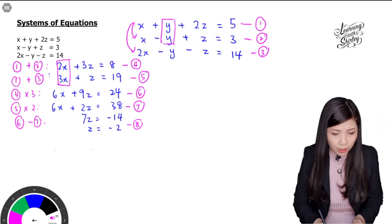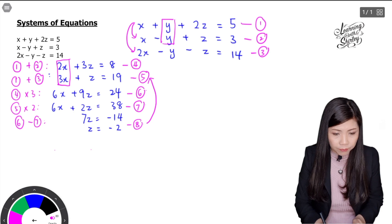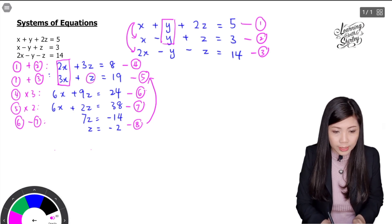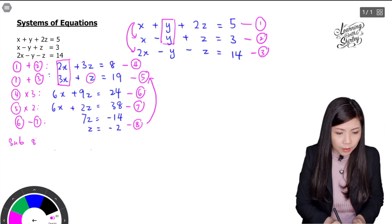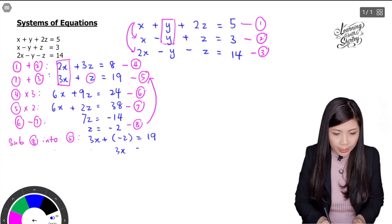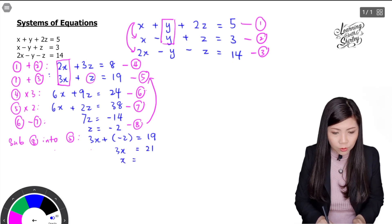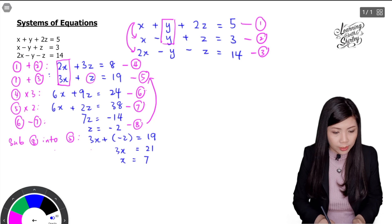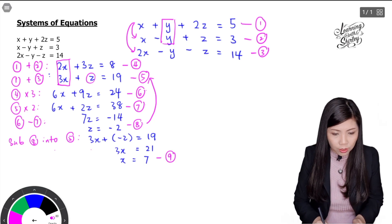Now I want to find the value of x. I'm going to substitute equation 8 (z equals negative 2) into equation 5. So 3x plus negative 2 equals 19, which gives 3x equals 19 plus 2, so 3x equals 21, and therefore x equals 21 divided by 3, which is 7. We now have x equals 7, and this is equation 9.